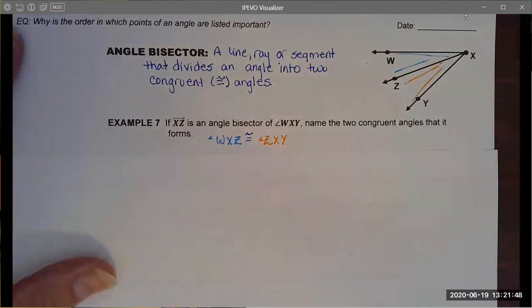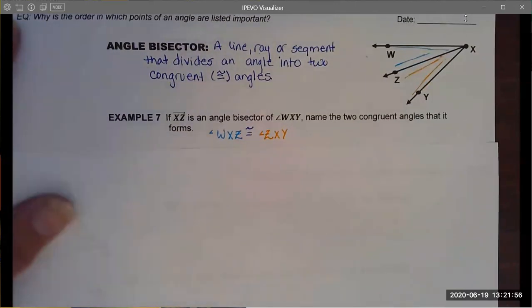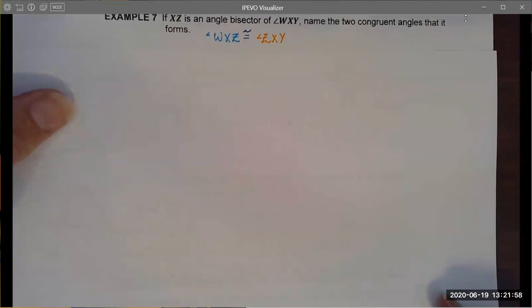I noticed that ray XZ splits my angle into two congruent parts and I would write that as angle WXZ is congruent to angle ZXY. My blue angle is going to measure the same as my orange angle. I love using color. Sometimes it makes it easier for me to see what's going on rather than just the nomenclature.